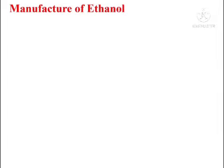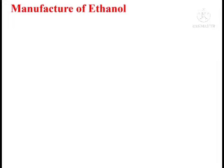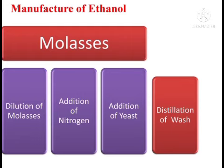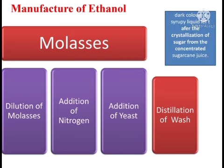First step: manufacture of ethanol. Normally ethanol is manufactured in industry by fermentation process. Fermentation is conversion of a complex organic molecule into simpler molecules by the action of enzyme. The enzyme present in yeast catalyzes many complex organic reactions. Here we are taking molasses solution. Molasses is a dark-colored syrupy liquid obtained after the crystallization of sugar from concentrated sugar cane juice. Molasses is actually a by-product obtained during the manufacture of sugar from sugar cane juice.